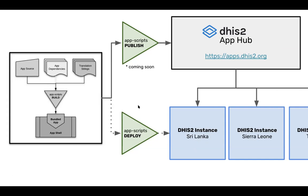The recommended way, at least for generic applications, is to publish your application to the App Hub. We have what we call the DHIS2 App Hub, which is kind of like the App Store for iPhone or the Play Store for Android — it's where a bunch of applications live that various developers have made, and they can be installed into any DHIS2 instance. This has some additional requirements on the application to be generic and usable in any DHIS2 instance, but it really helps to grow the community as well as to grow the exposure of your applications.